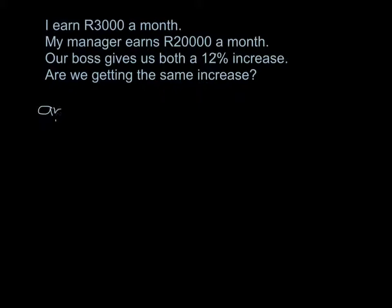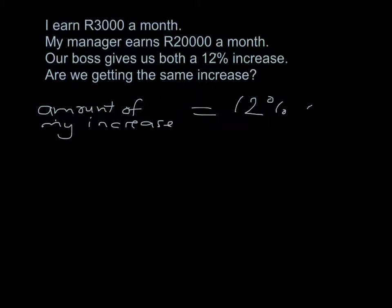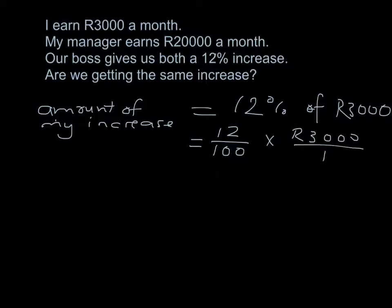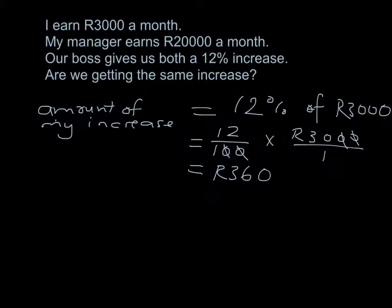The amount of my increase — well, I've been told 12% of 3,000 Rand, which is 12 over 100 times 3,000. To avoid multiplying very large numbers, I'll divide top and bottom by 100, leaving me with 12 times 30. Since 12 times 3 is 36, 12 times 30 will be 360. So the amount of my increase will be 360 Rand.